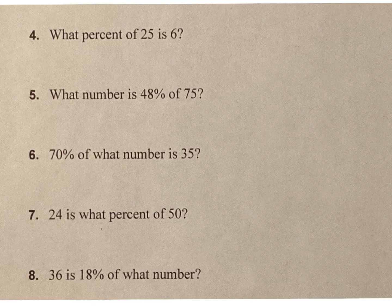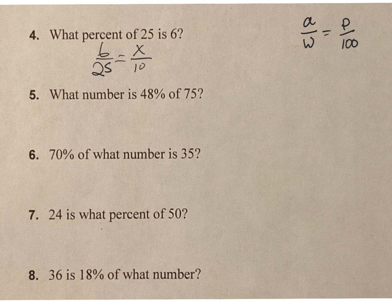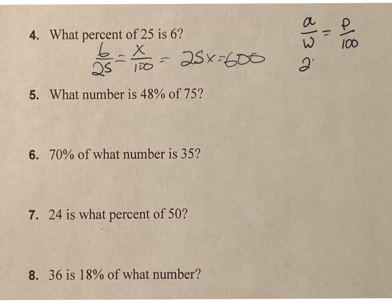Number 4. For these problems I'm going to use the proportional method, where I have A — part over whole — equals percent over 100. If I know all but one, I can figure out what I don't know. What percent of 25 is 6? 25 is my whole, 6 is my part, equals the percent over 100. It's going to be 25x equals 600. I divide each side by 25, and my percent is 24%.